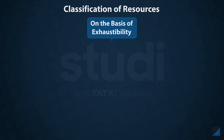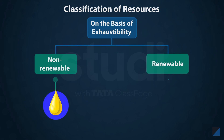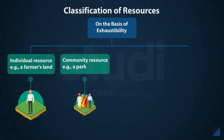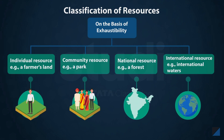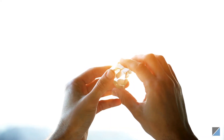Resources can also be classified based on their exhaustibility — whether they are non-renewable resources like fossil fuels, or renewable resources like solar power. Resources may be owned by an individual, a community, a country, or an international institution.